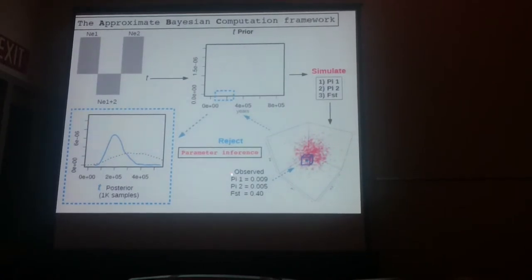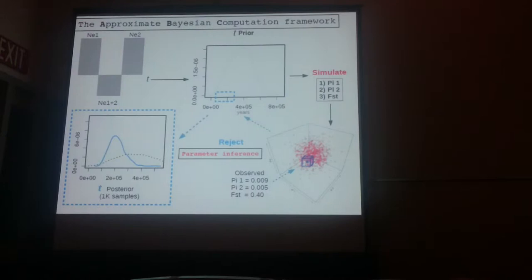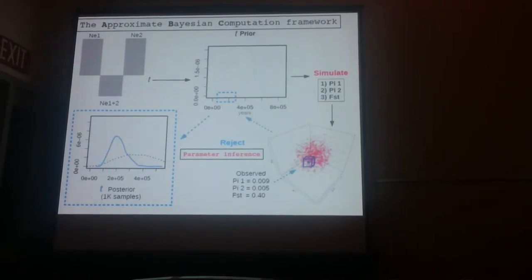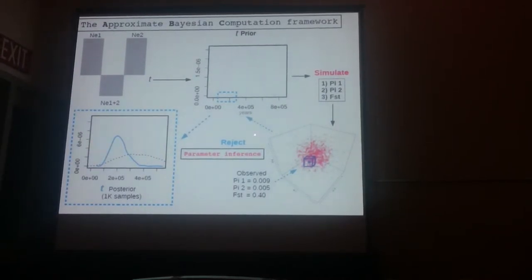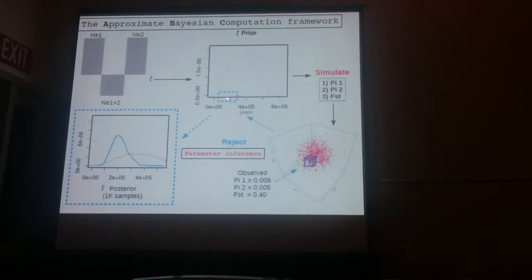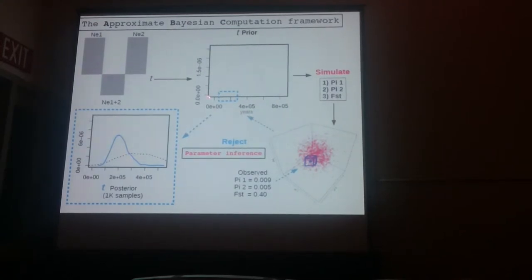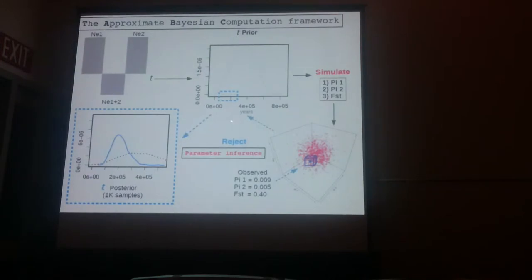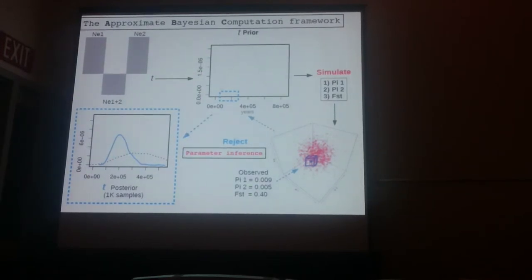Let's say you have observed summary stats that sit right in the center of this cube, and the cube represents the 5000 closest points that you have observed. You go back and check which values of T generated those summary stats, and this will give you a posterior density or posterior probability of T.